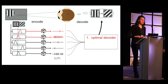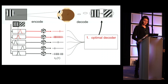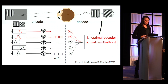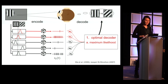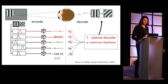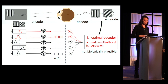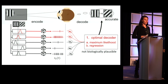One traditional approach is to formulate an optimal decoder. Optimality can be reached in two different ways. First, one can use the probabilistic encoding model to formulate the statistically optimal decoder — that could be a maximum likelihood or Bayesian approach. In our model, the maximum likelihood decoding weights turn out to be a linear weighted sum of the responses. Because of that, the same optimal decoding weights could also be learned with a simple linear regression.